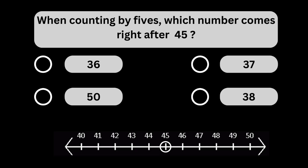When counting by fives, which number comes right after 45? When counting by fives, the number 50 comes right after 45.